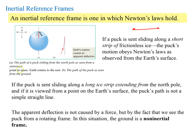In picture A, it shows the path of a puck sliding from the North Pole as seen from a stationary point in space — from space you'd see the Earth rotating and the puck going straight. However, if the puck slides along a long ice strip from the North Pole and is viewed from a point on the Earth's surface, the path is not a straight line — you actually see a curve. This is a non-inertial frame because the direction is changing, implying acceleration even though no forces are acting on it.